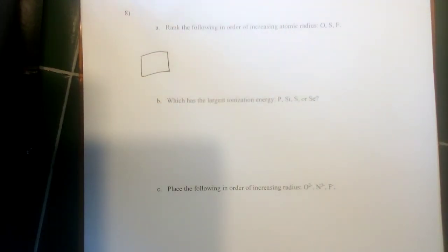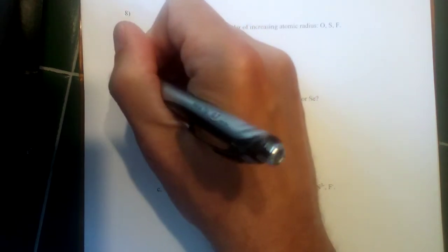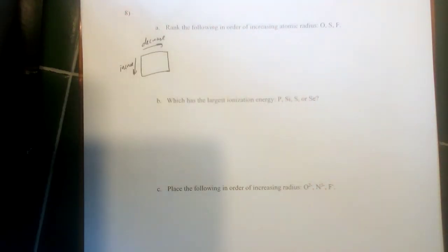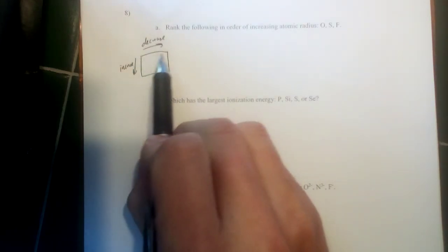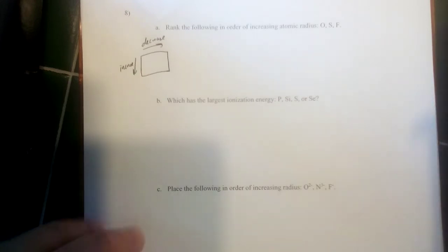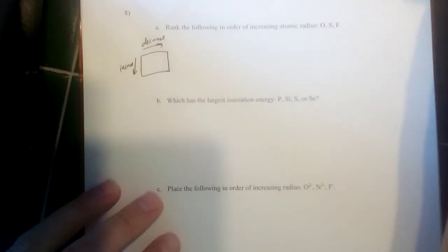On the periodic table, atomic radius increases as you go down and decreases as you go across. It increases going down because you're adding extra electron layers as you fill more sublevels. It decreases going across because within an energy level the nuclear charge is going up, so even though electrons are going into the same layer, the increased charge pulls those electrons closer.